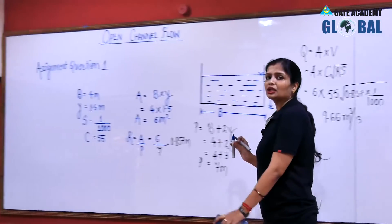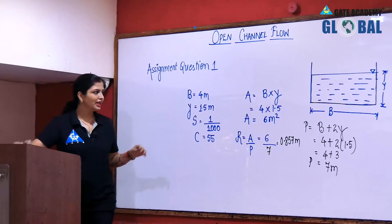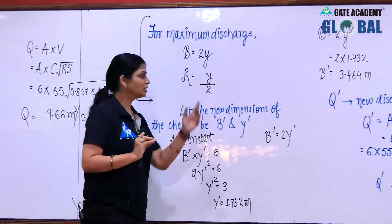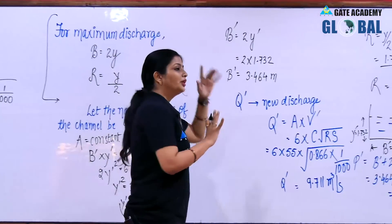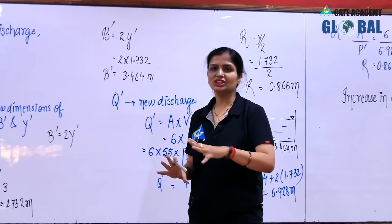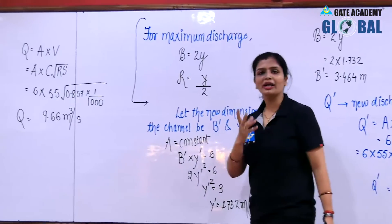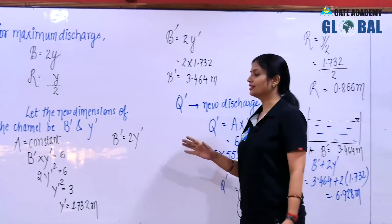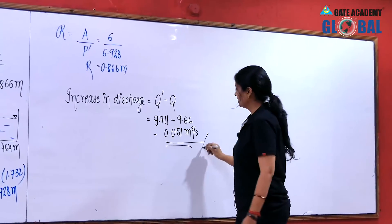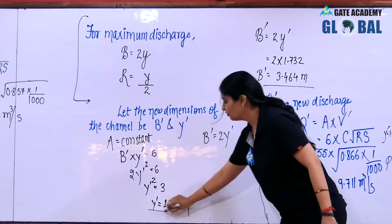The questions are very simple if you are clear with the concepts. Initially you calculated the discharge, then changed the dimensions. The new dimensions are B dash = 3.464 meter and Y dash = 1.732 meter, and the increase in discharge is new discharge minus initial discharge = 0.051 meter cube per second.